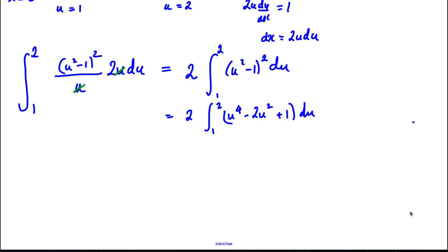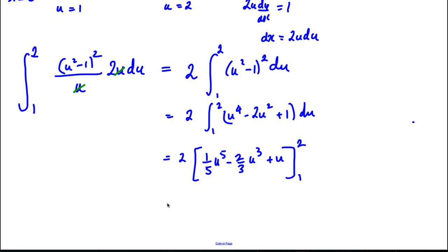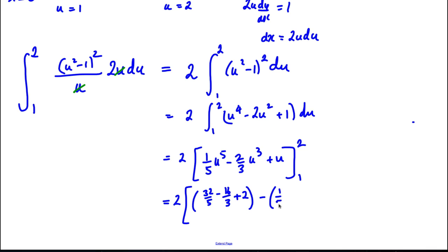Integrating, keeping the 2 outside: we get one-fifth u⁵ - two-thirds u³ + u, evaluated between 1 and 2. Substituting in 2: 32/5 - 16/3 + 2. Then subtracting the result at u=1: 1/5 - 2/3 + 1.